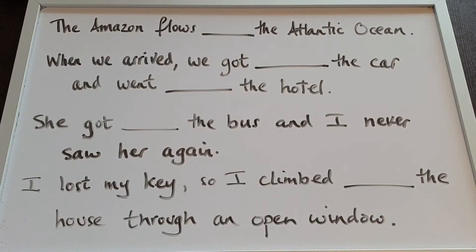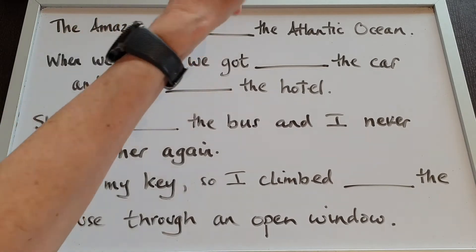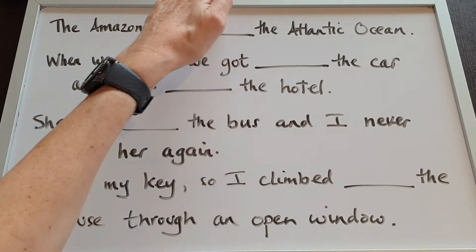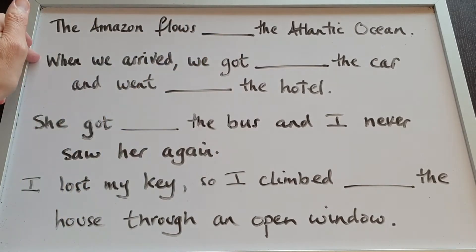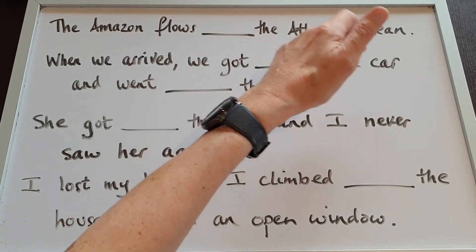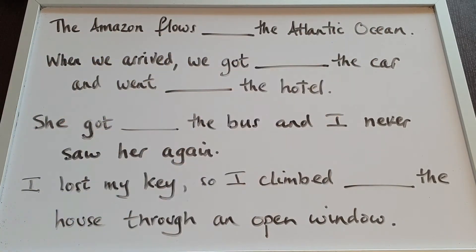Have a look at Uncle Jeff's board. Here are some sentences with missing prepositions. What are they? Number one: The Amazon flows [blank] the Atlantic Ocean. Number two: When we arrived, we got [blank] the car and went [blank] the hotel. Number three: She got [blank] the bus and I never saw her again. And the last one: I lost my key, so I climbed [blank] the house through an open window. What are the missing prepositions? They all convey movement.